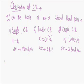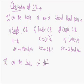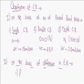The second classification of covalent bonds is based on the difference in electronegativity (E.N.). On this basis, we can classify covalent bonds into two types: polar covalent bond and non-polar covalent bond.